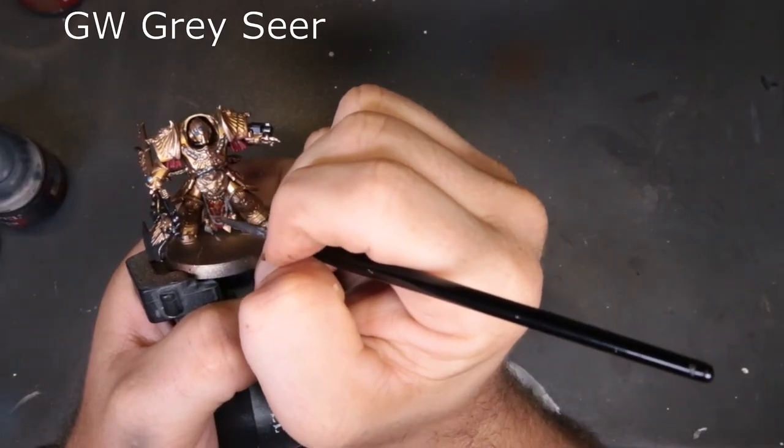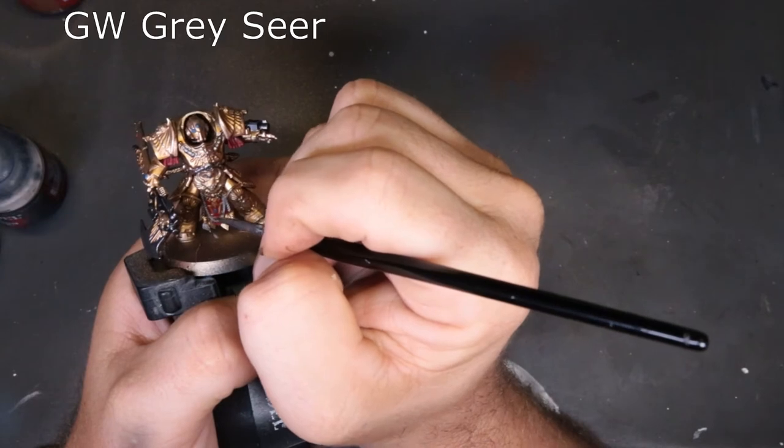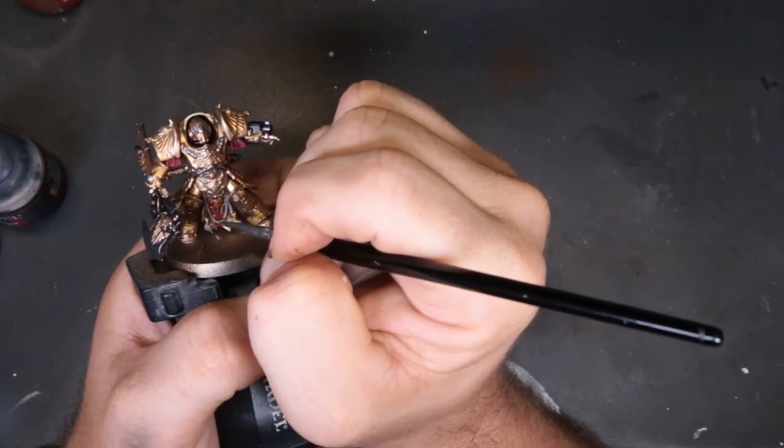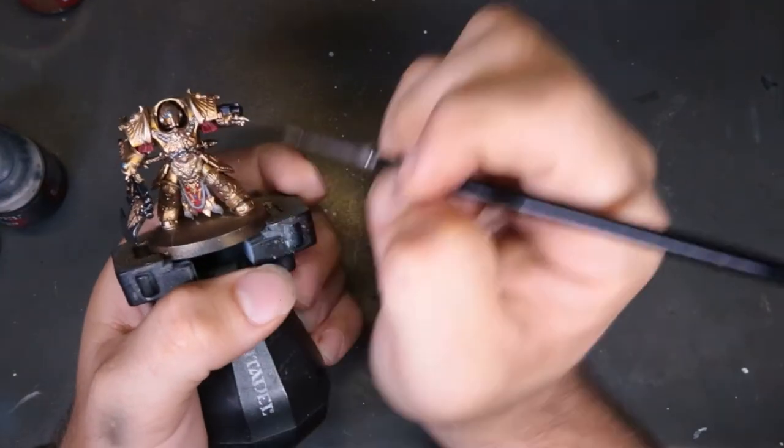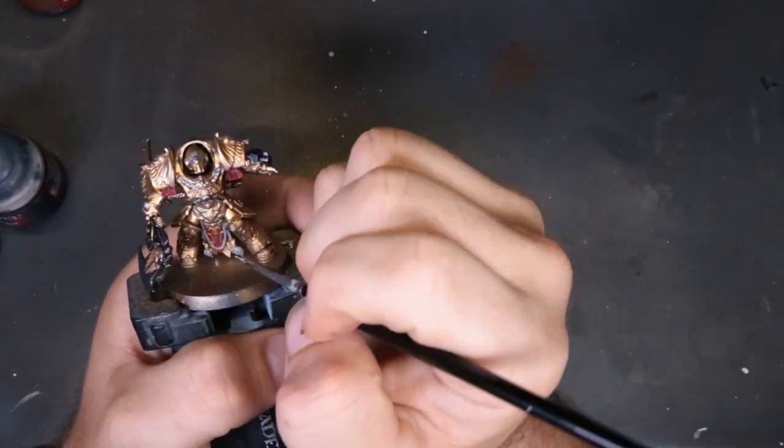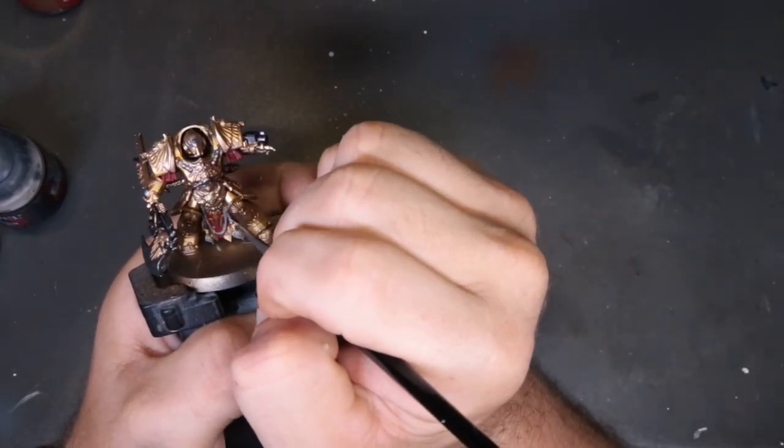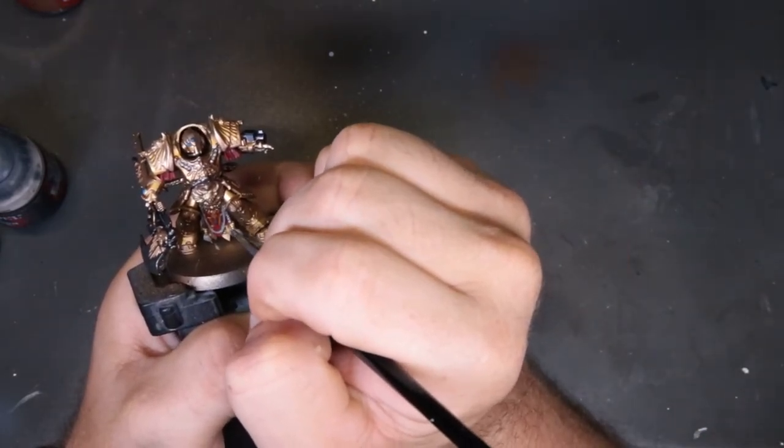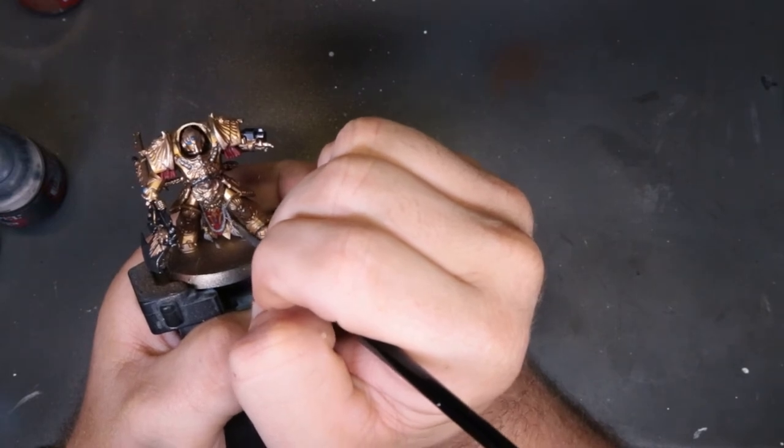So continuing with what we matted down with the washes and highlighting it back up, we come through with Grey Seer again. We're just trying to avoid the crevices where the shade settled and we're just trying to hit the upper parts of these rope nodules. So just be careful here. If again, if you mess up, it's just paint. Throw some more wash on it, give it a couple minutes to dry, keep working on it.